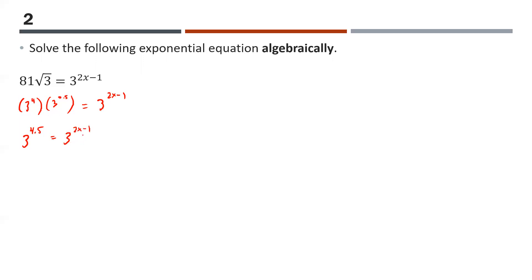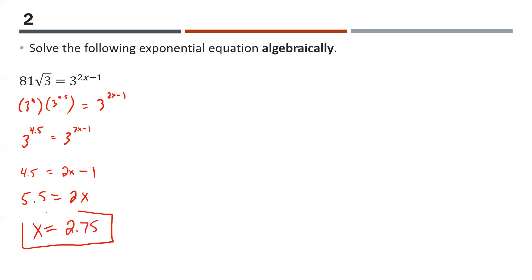Since the only difference between the two sides are the exponents, we drop the base altogether and say 4.5 equals 2x minus 1. This is just a standard linear equation: add 1 to get 5.5 equals 2x, then divide by 2. So x equals 2.75. With exponential equations you don't need to verify — that's only required for logarithmic equations.